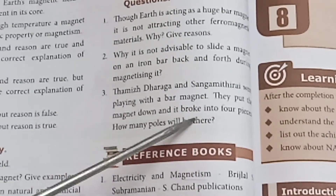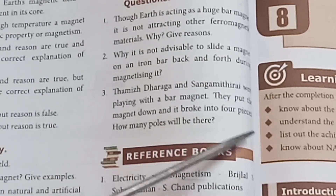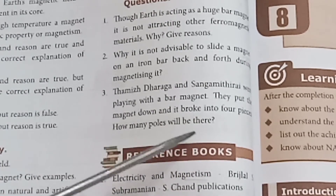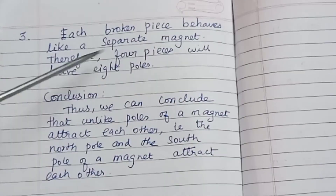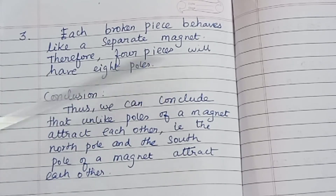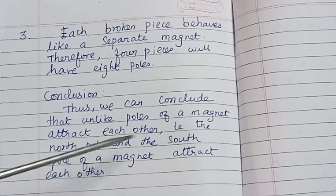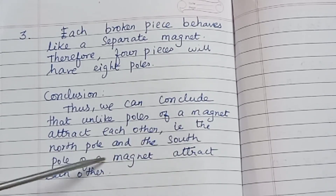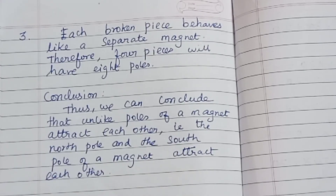Question 3: Dharaha and Sangamitra were playing with a bar magnet. They broke it into four pieces. How many poles will there be? Answer: Each broken piece behaves like a separate magnet. Therefore, four pieces will have eight poles in total. Conclusion: Unlike poles of a magnet attract each other — the north pole and the south pole attract.